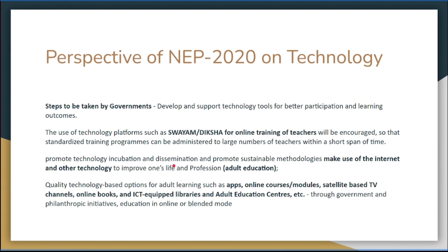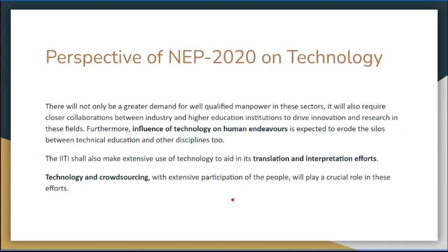The national education policy says that state and central governments will take steps for implementation of technology. Platforms like Swayam and Diksha, which are online training platforms for teachers, can also be made available. The internet and other technology must be used for adult education, and apps like online courses, modules, satellite-based technology channels, online books, ICT-equipped libraries, and adult education centers have to be created.